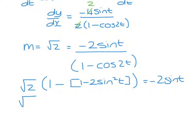So we have root 2 minus root 2 plus 2 root 2 sine squared t equals minus 2 sine t.